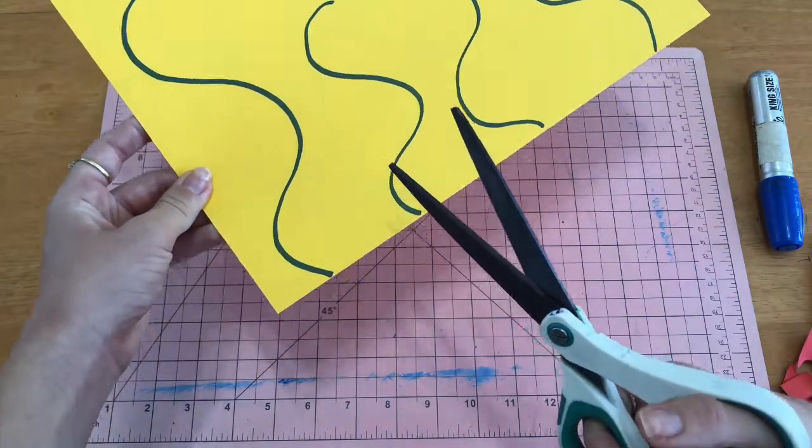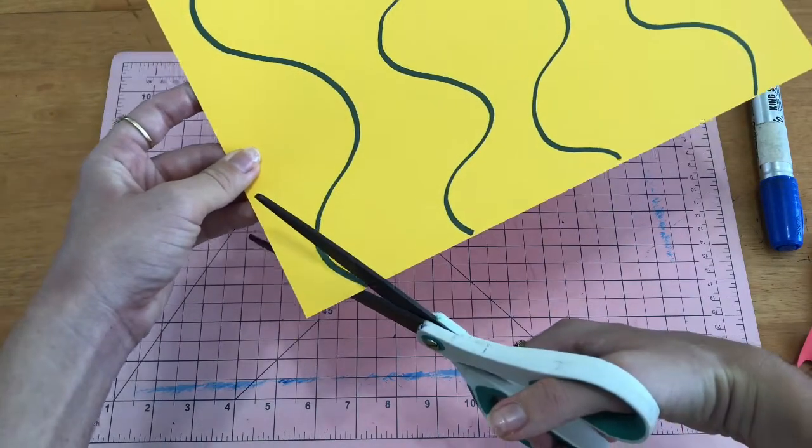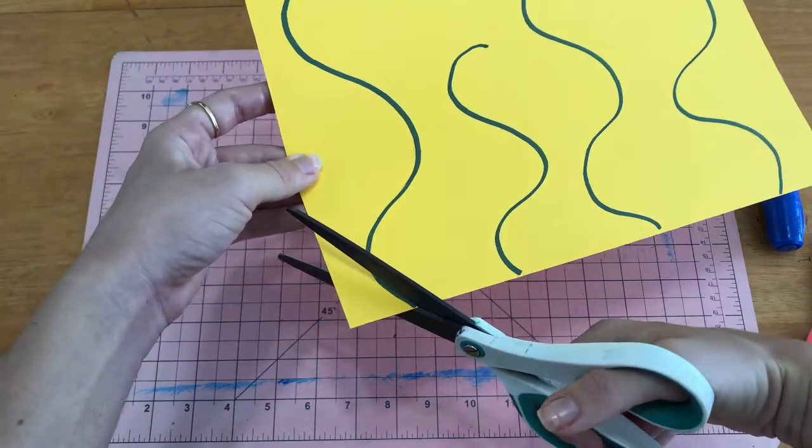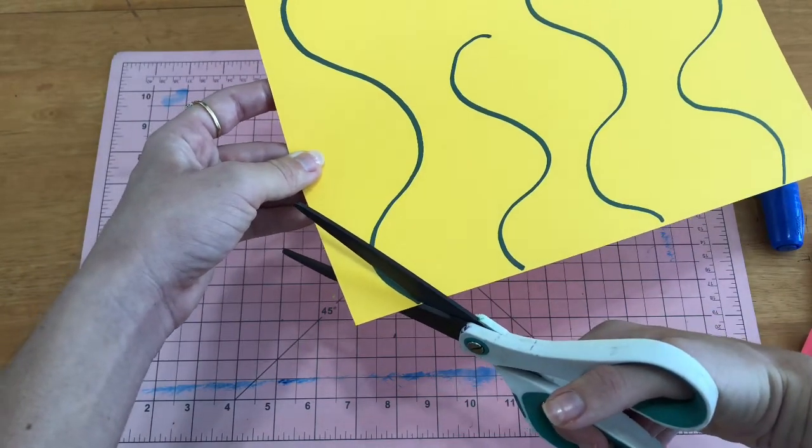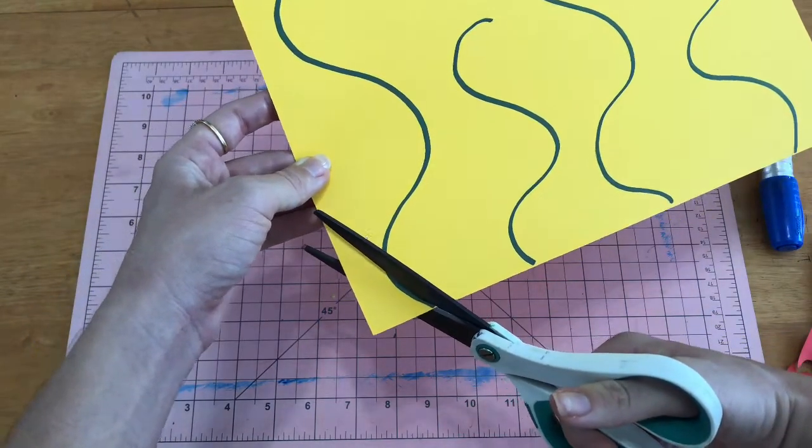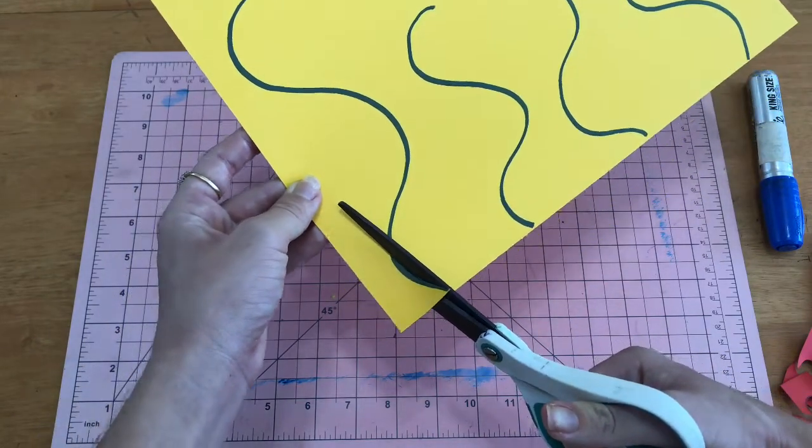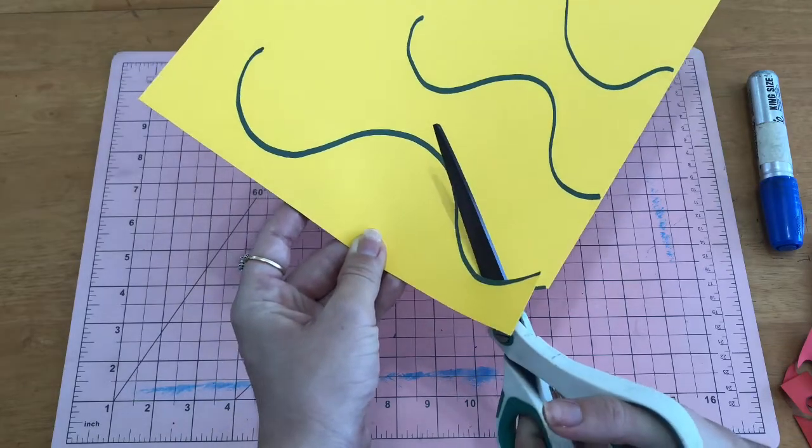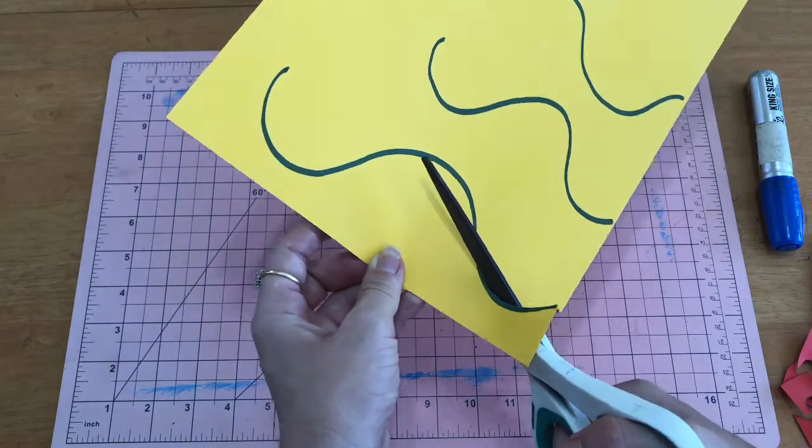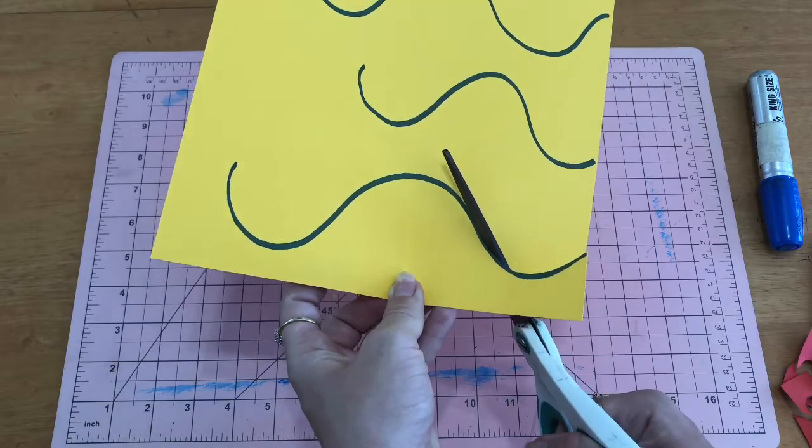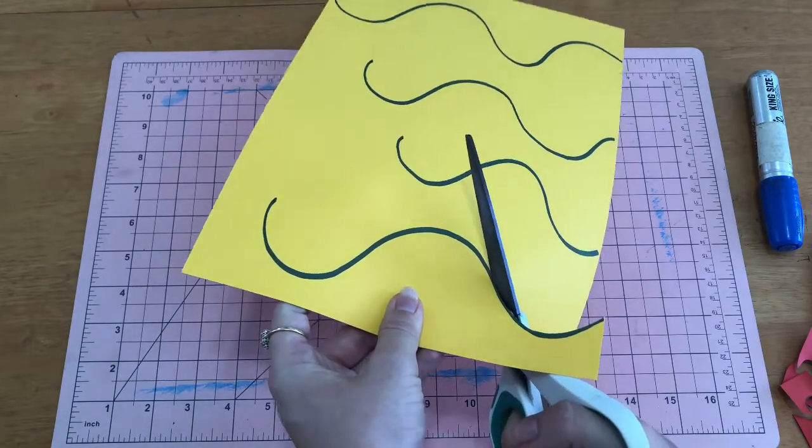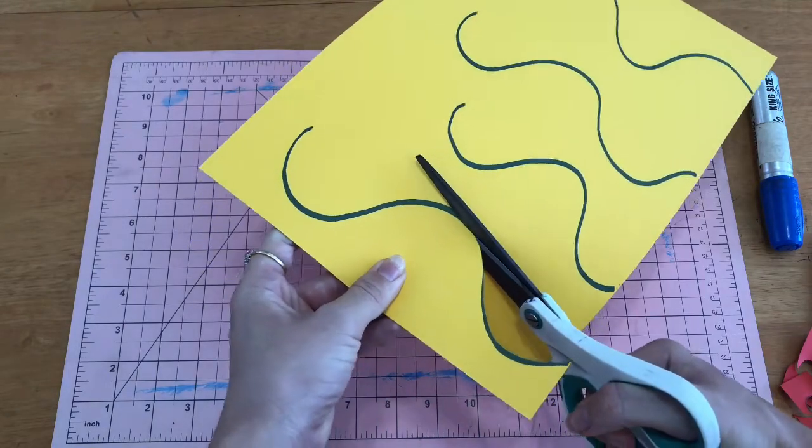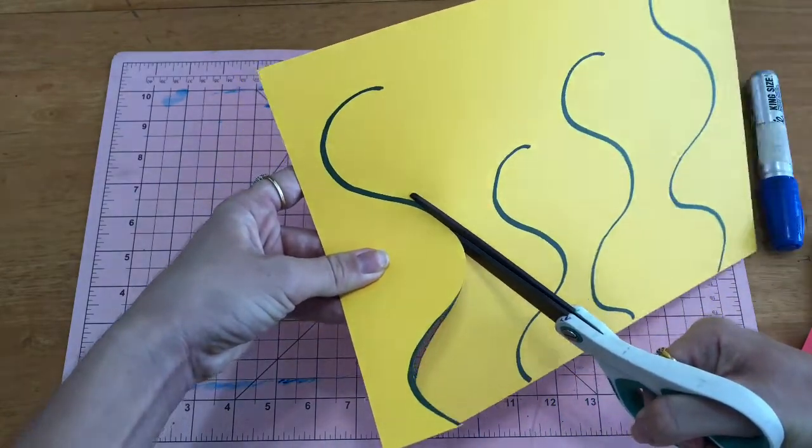So I've opened my scissors, and I'm going to line it up on this line. Do you see? Now I'm ready to cut, so I'm going to slowly start to close my blades. And do you see how I'm turning my paper and my scissors at the same time? Open it again and move it forward. Close it slowly and turn that paper.